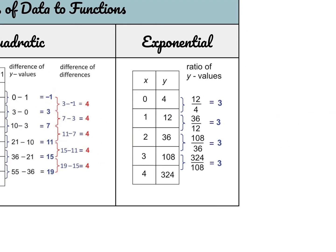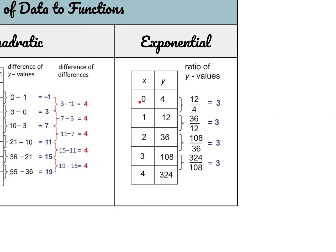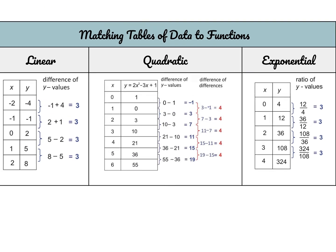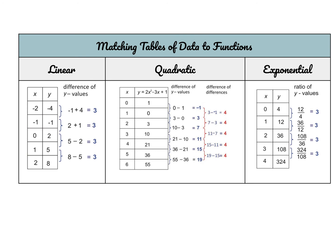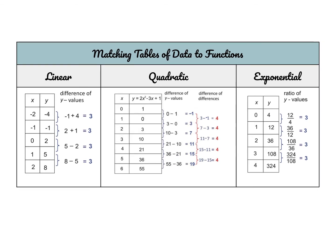For an exponential table, you again need a common interval for X-values. If you look at the Y-values, you don't have a common difference — you have a common ratio, meaning you're multiplying by the same number to get to the next term. Sometimes it's not perfect, but if it's really close, you can model it with an exponential function. With regression models, it just needs to be a close fit.